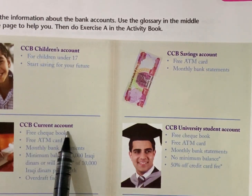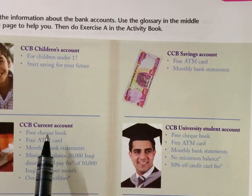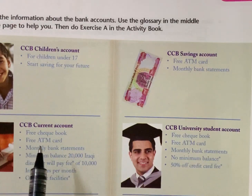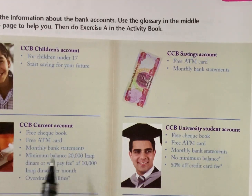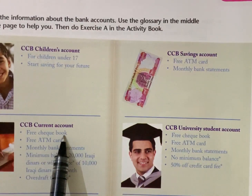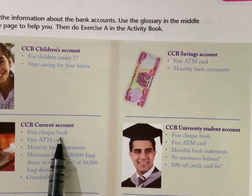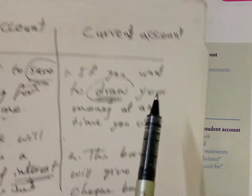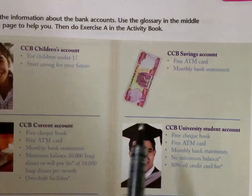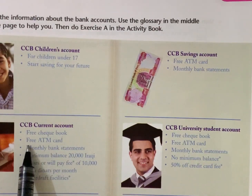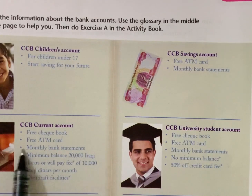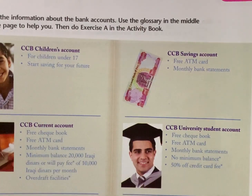النوع الثالث: CCB Current Account — الحساب الجاري. شرحناه: if you want to draw your money at any time you want — تسحب نقودك بأي وقت. البنك راح يعطيك free checkbook — دفتر شيكات مجاناً. أيضاً free ATM card — بطاقة صراف آلي. وأيضاً monthly bank statement. الفرق الأساسي هو إن هذا الحساب يعطيك checkbook.